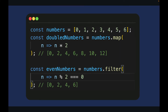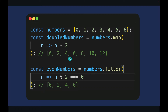Array methods: map and filter. We can use map and filter functions to create new arrays from an existing one. I have this numbers array and if I want to create a new array from it I can use the map function, which iterates through each element of the array and returns a new item, giving me a new array. So I'm returning a doubled numbers array where each item is the doubled value of the original.